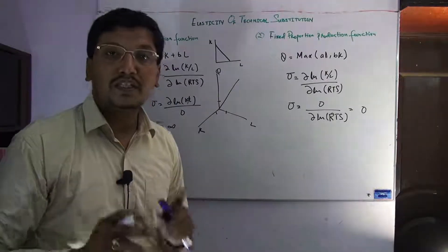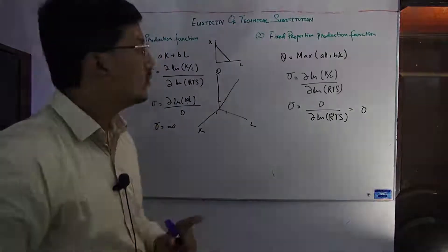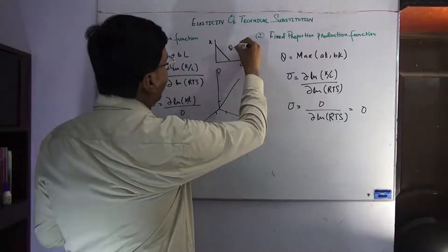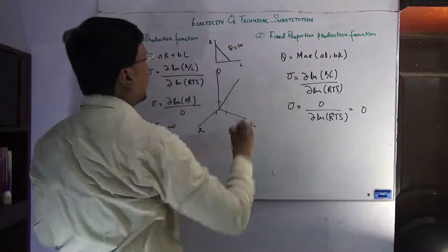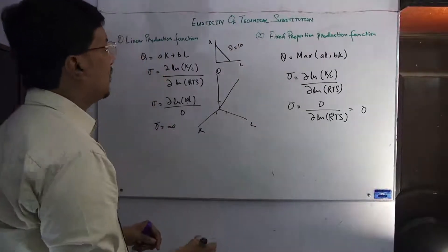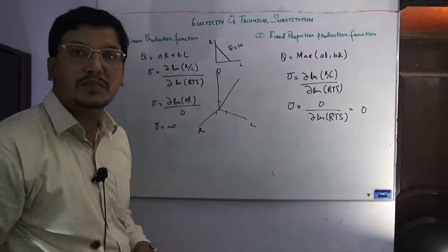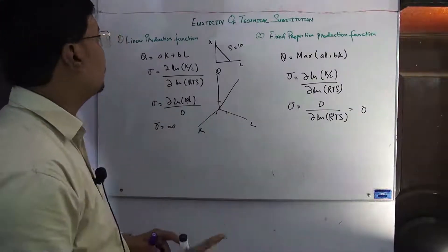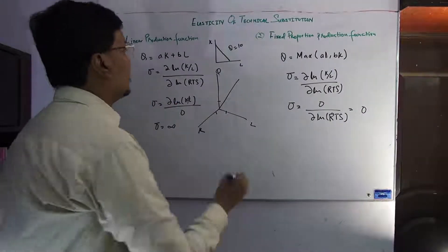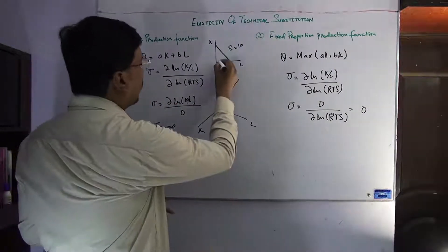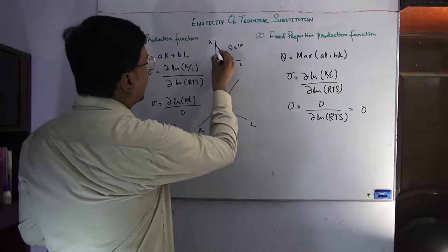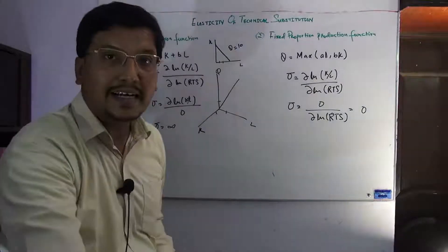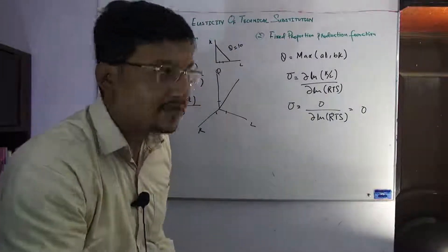What will be the shape of the isoquant? Let's suppose 10 units are produced, so in all combinations you will produce 10 units. If you increase labor, then you will reduce capital, which is why this line is negatively sloped.